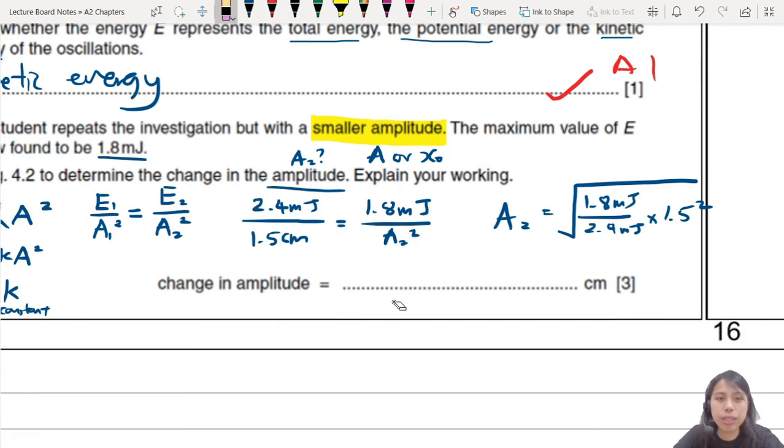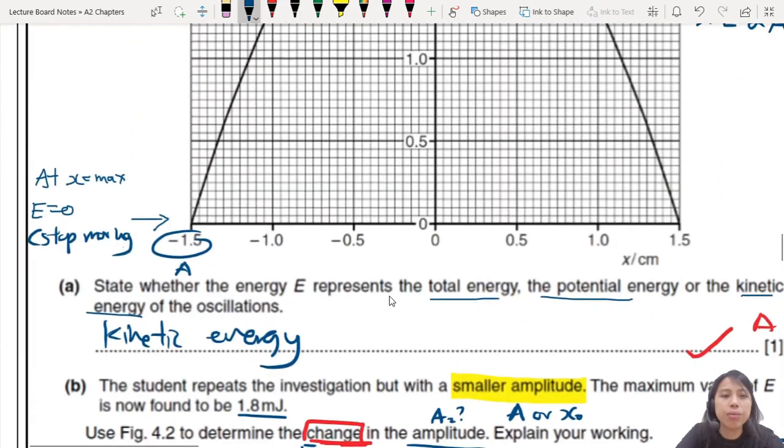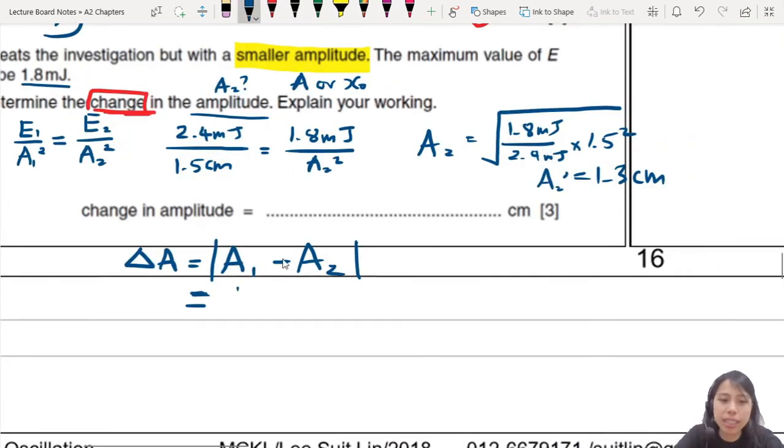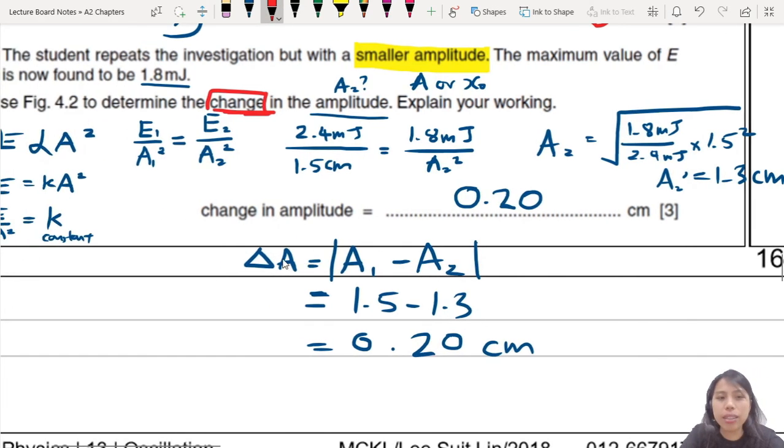So A2 will be square root 1.8 millijoules over 2.4 millijoules times 1.5 squared. So you should get about 1.3 cm as your new amplitude. But, be careful, they want change in amplitude. So, you need to find what is your change in amplitude. So, original amplitude minus the new amplitude. So, originally from the graph is 1.5 but now it's smaller, 1.5 minus 1.3 change will be 0.20 or 0.2 cm. This thing alone takes 3 marks.